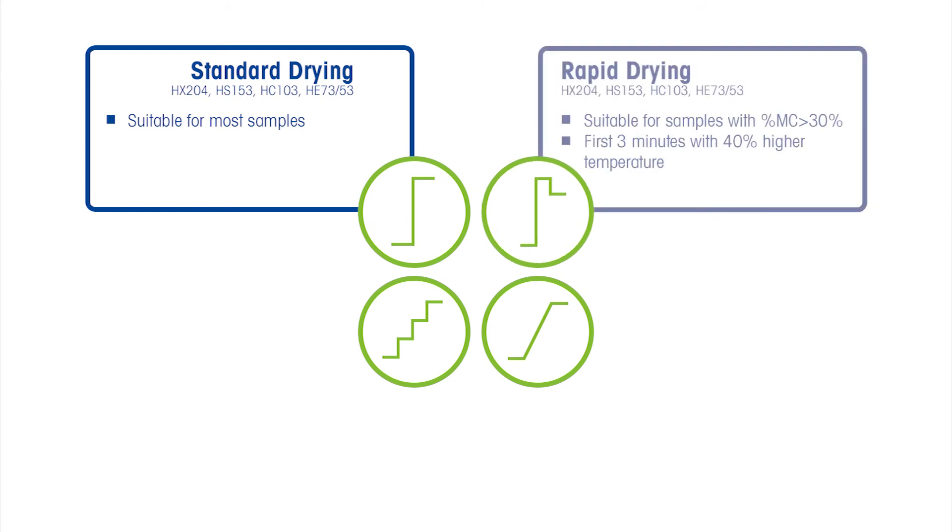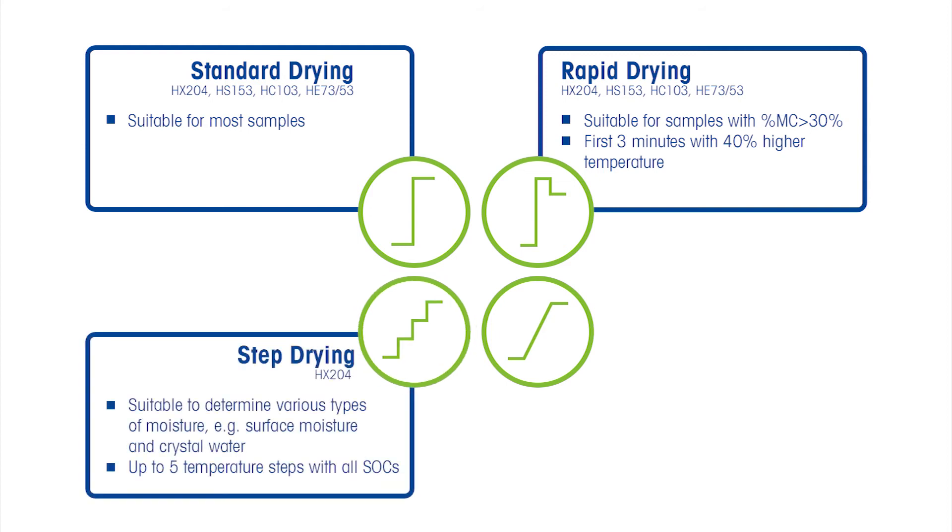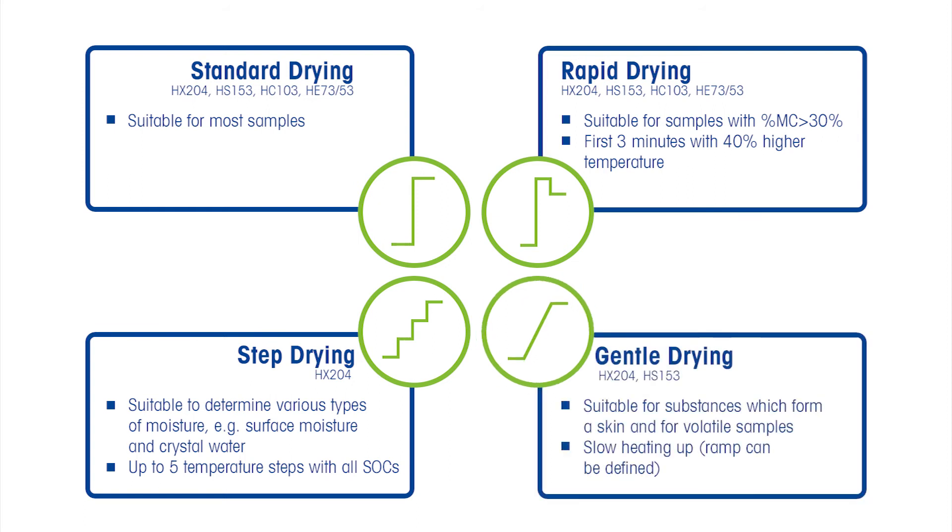Rapid drying is good for samples with moisture content higher than 30%. Step drying can be used to differentiate between surface and bound moisture. And gentle drying for skin-forming or temperature-sensitive samples.